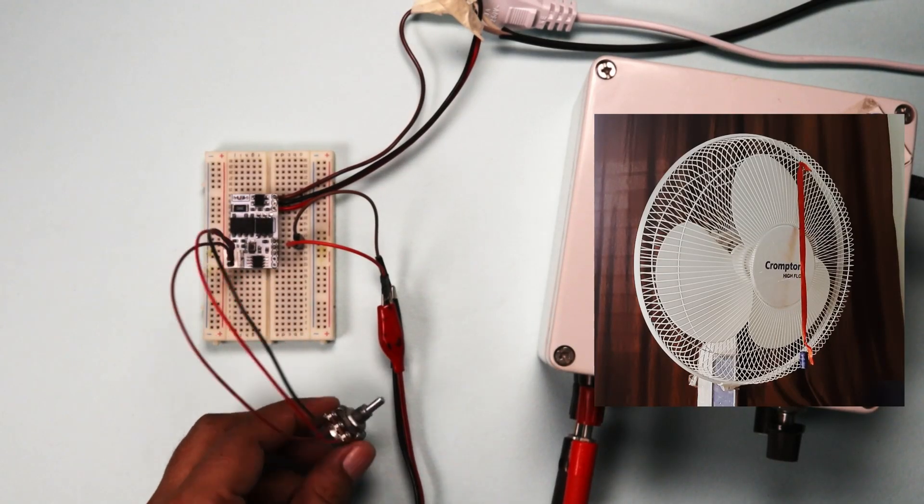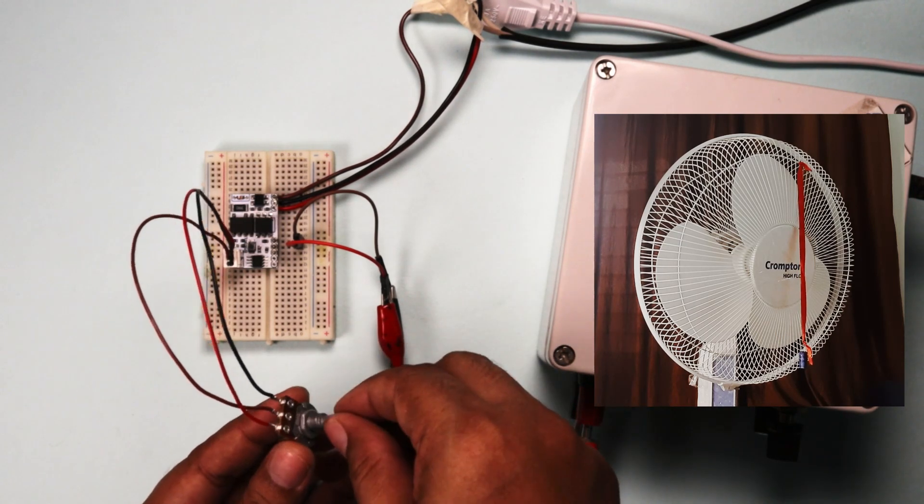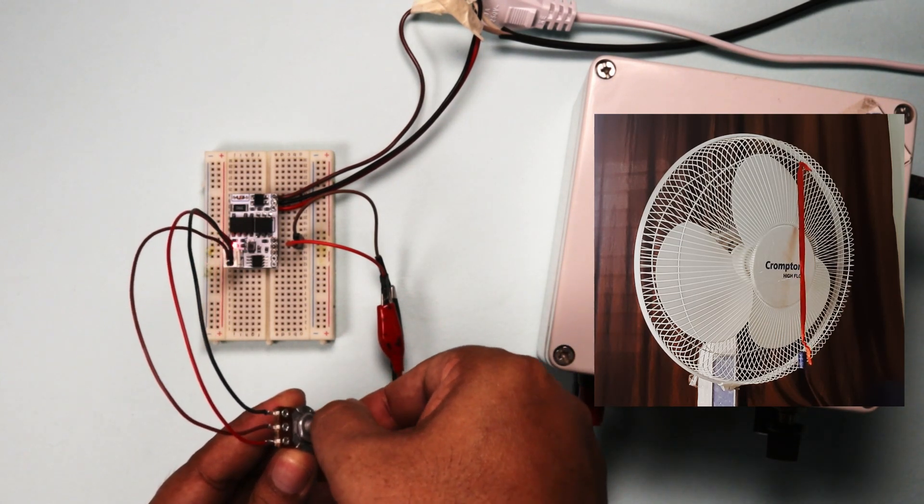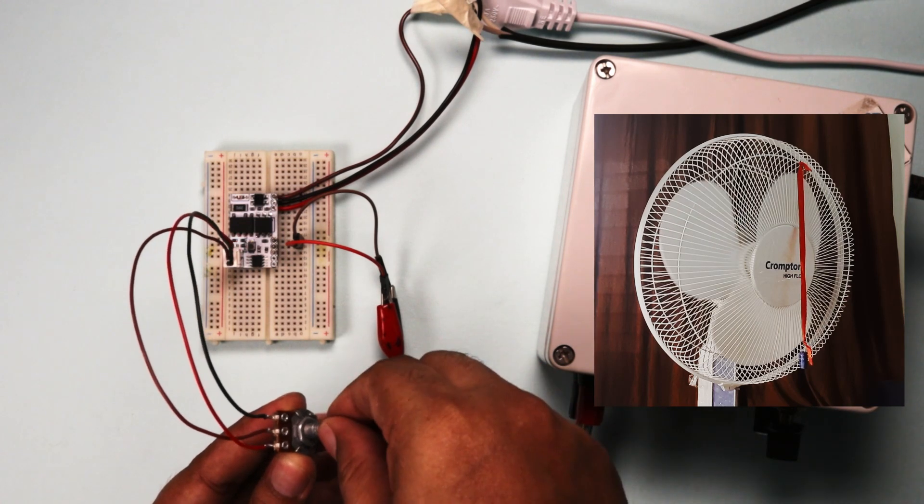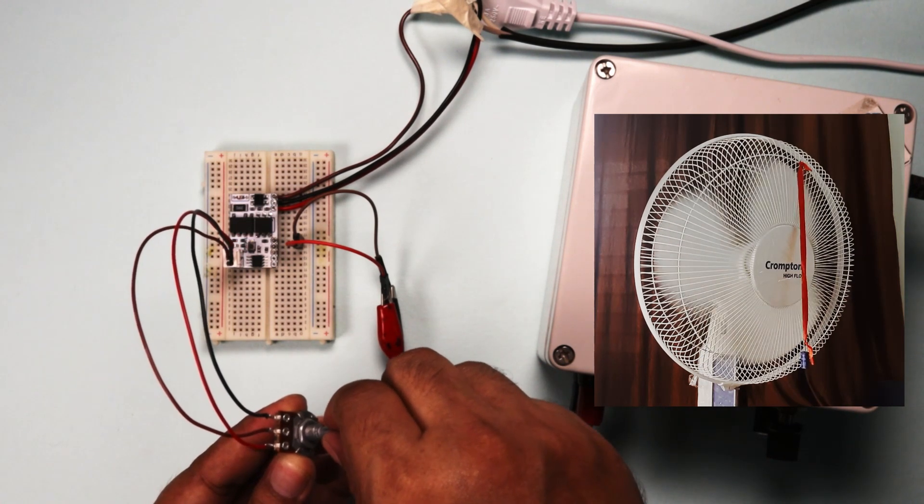Lastly, I will control the fan speed using the same setup as before. I have replaced the filament bulb with the AC fan. Now, I am controlling the fan speed using the knob.